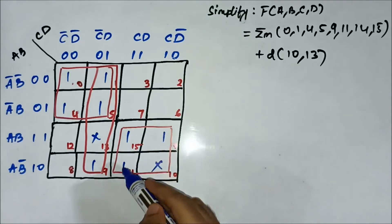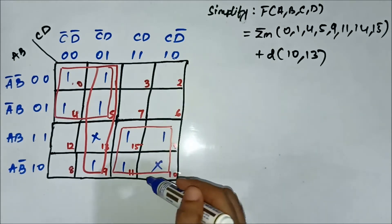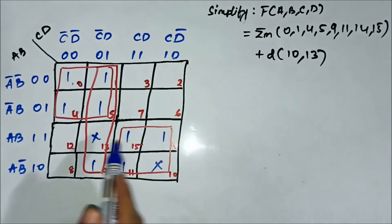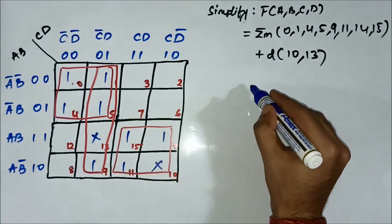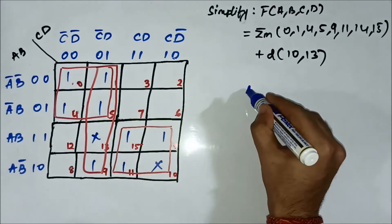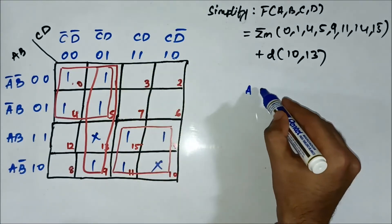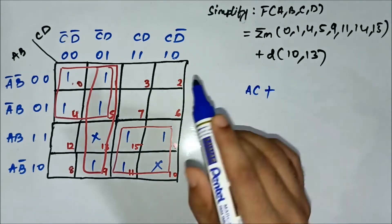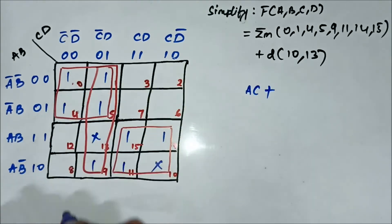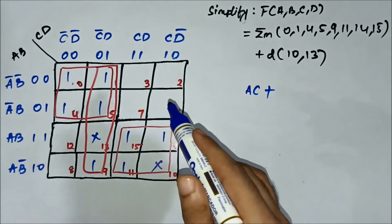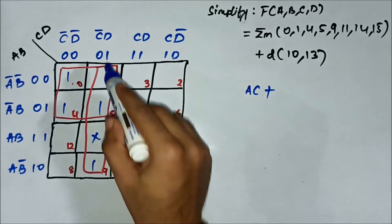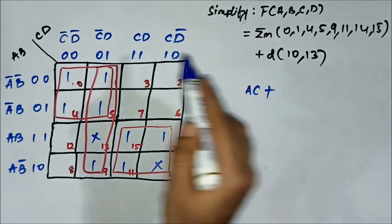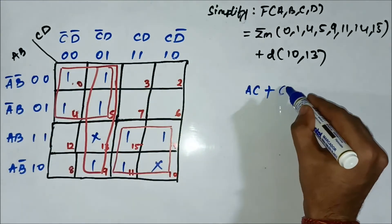Now we identify the common variables. For the quad involving cells 10, 11, 14, 15: in the horizontal side we have A common, in the vertical side we have C common, giving us A·C. For the quad involving cells 1, 5, 9, 13: in the vertical side we have C̄·D common, in the horizontal side there is nothing, giving us C̄·D.